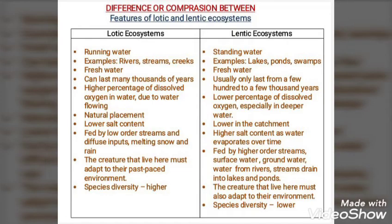Now for the comparison between lotic and lentic ecosystems. Lotic involves running water; lentic involves standing water. Lotic examples: rivers, streams, creeks. Lentic examples: lakes, ponds, swamps. Lotic ecosystems can last many thousands of years; lentic usually only last from a few hundred to a few thousand years. Lotic ecosystems have a higher percentage of dissolved oxygen; lentic have a lower percentage of dissolved oxygen.